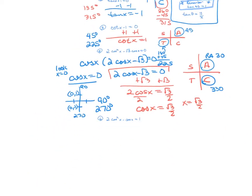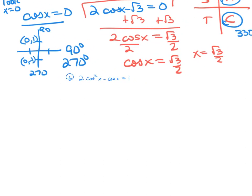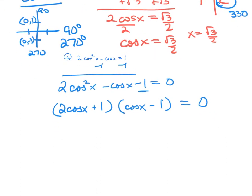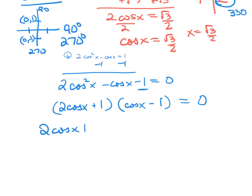Let's try number 6. This one's a trinomial that we need to factor. I'm going to subtract 1 from both sides, giving 2 cosine squared x minus cosine x minus 1 equals 0. I need to find two binomials that FOIL to give this trinomial. I'll put 2 cosine x and 1 cosine x, with factors of negative 1 being 1 and negative 1. Checking the outer and inner FOIL gives negative cosine x for the middle term, which checks out.